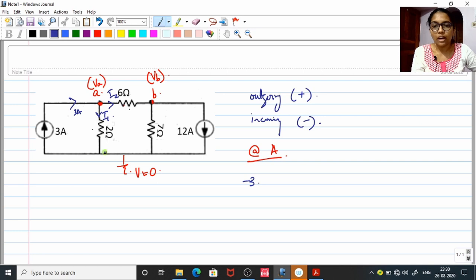And I1 is outgoing, so positive I1. And here I2 is outgoing, so positive I2 equal to 0. Now let us find the values for I1 and I2. See, I1 means current is equal to voltage difference by resistance.